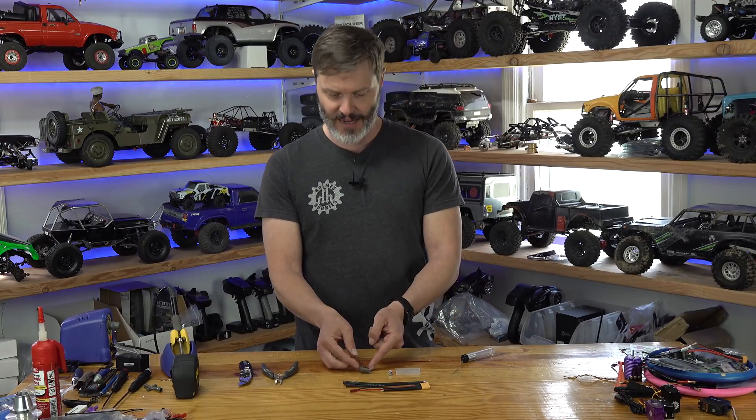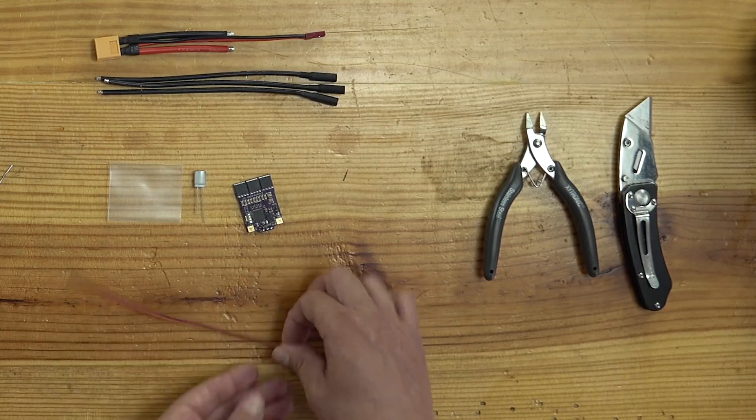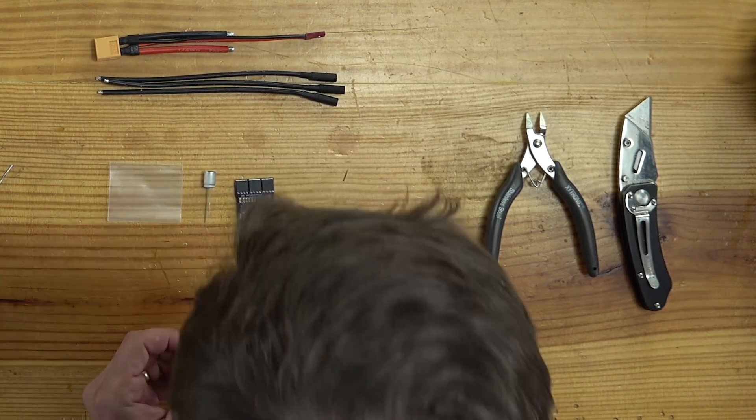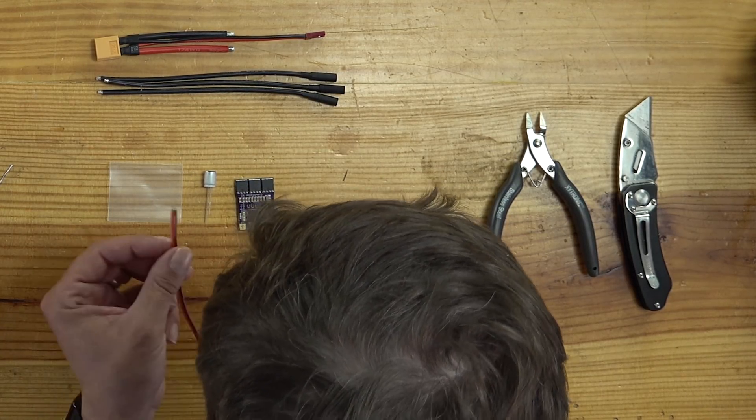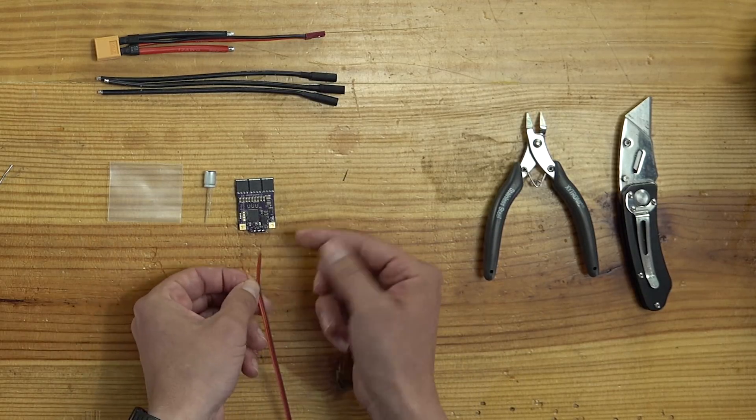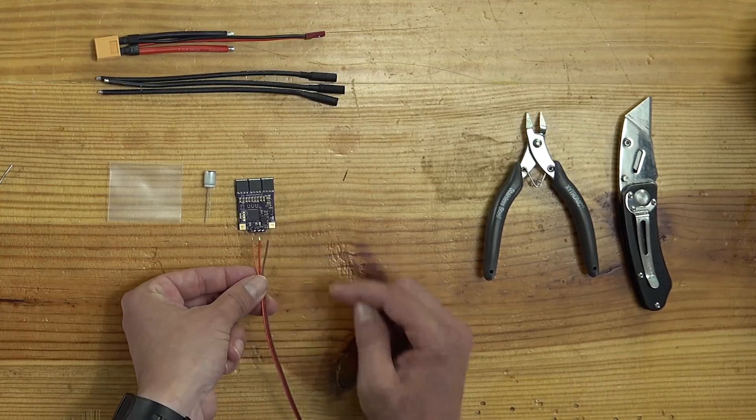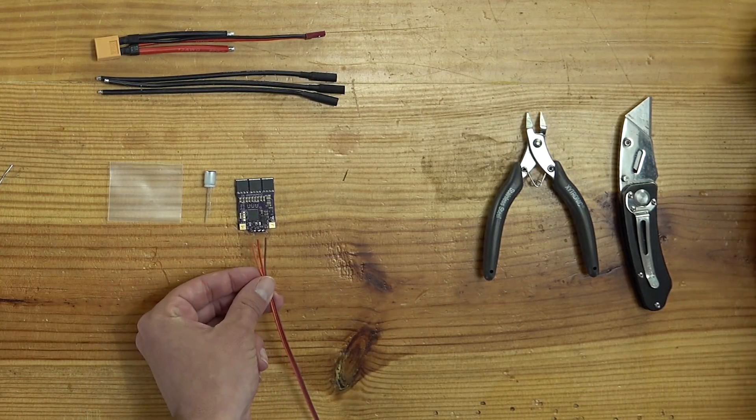Alright. So I got everything pre-tinned as you can see. One, two, three, one, two on there. And then the RX lead pads on the backside here. So we look really close. Our ground is going to be closest to the ground pad. So looking on this backside here, it goes ground, our five volt, and then our signal just like that. So that's how I'm going to solder them up.